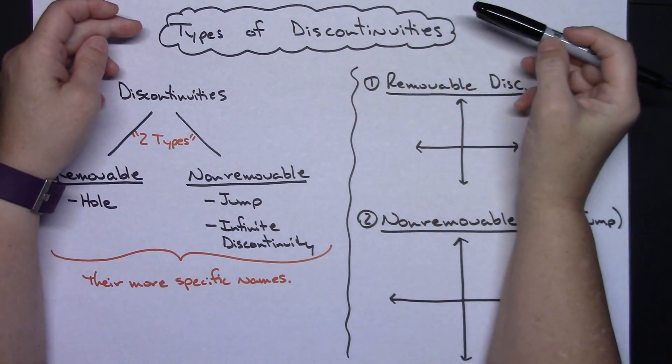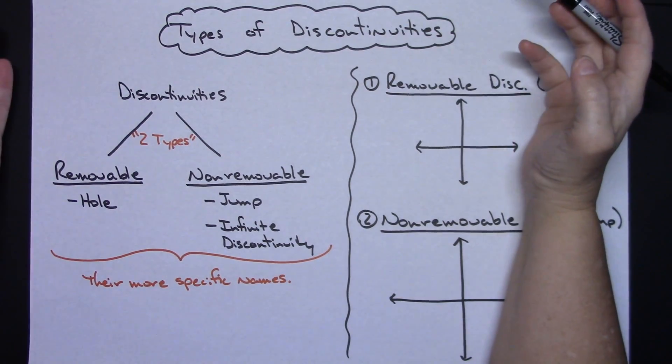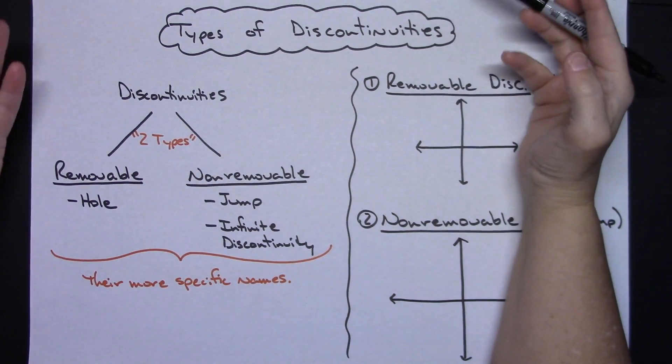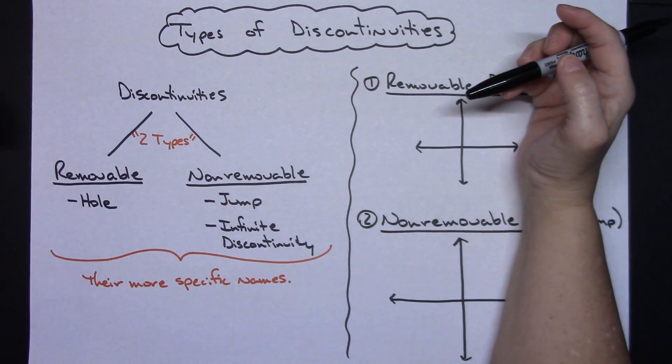In this video, I'm going to be taking a look at different types of discontinuities. Discontinuities occur on functions. You can see them when you graph the function, and it's good to be able to identify the different types.